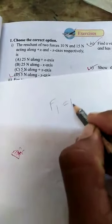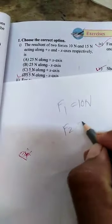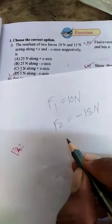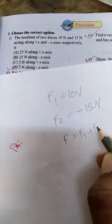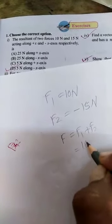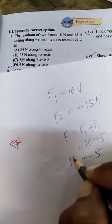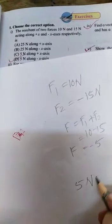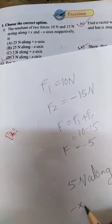Solving the question: F1 is equal to 10 newton along the positive x-axis, and F2 is given as minus 15 newton because it is along the negative x-axis. The resultant force is equal to F1 plus F2, that is 10 minus 15 equals minus 5. Minus means negative x-axis, so the answer is 5 newton along the negative x-axis.